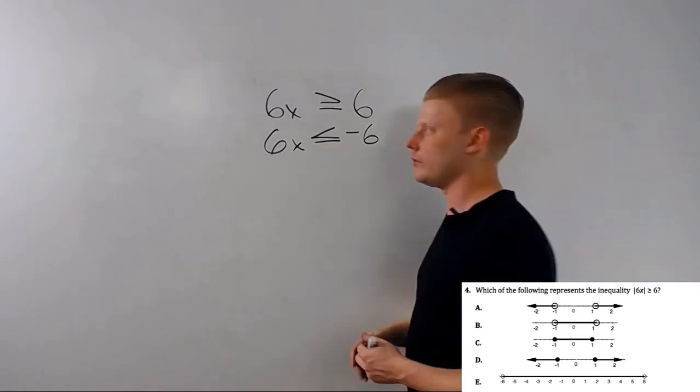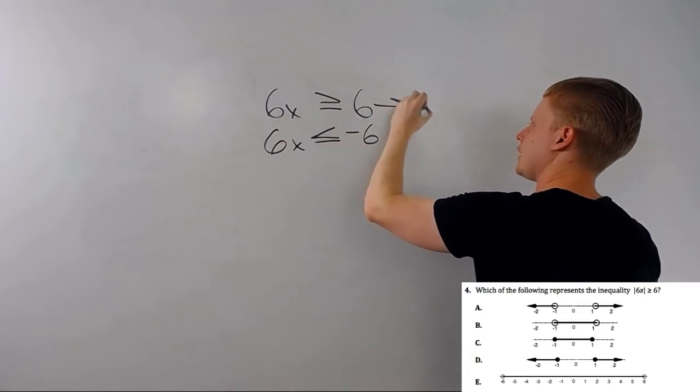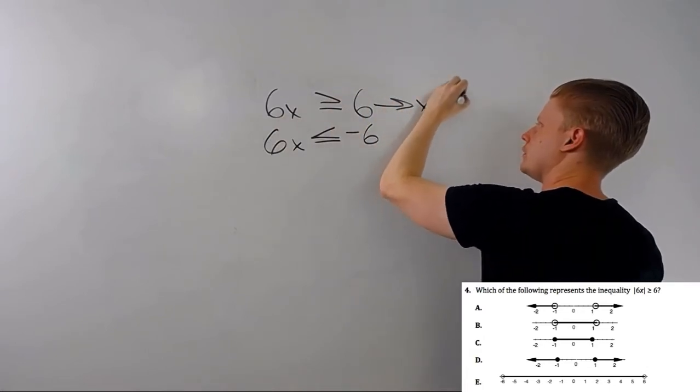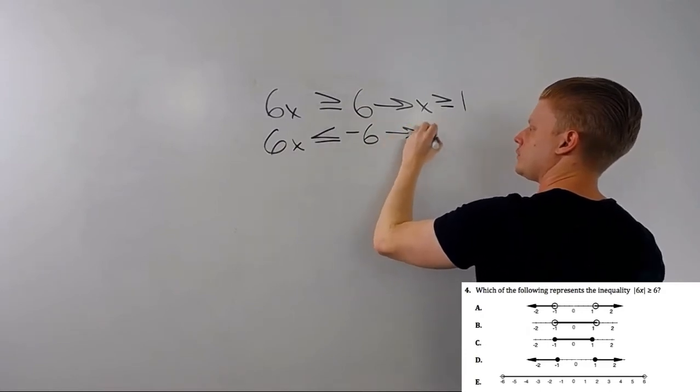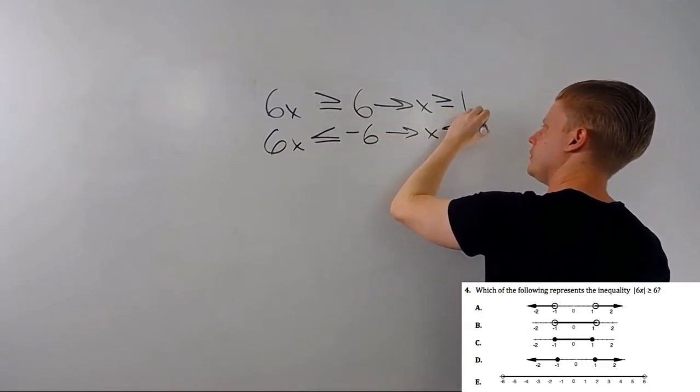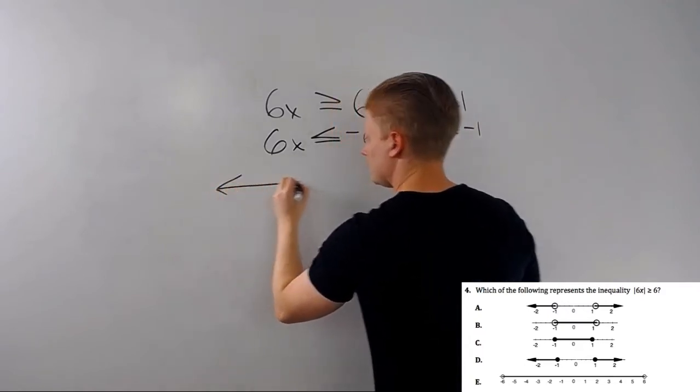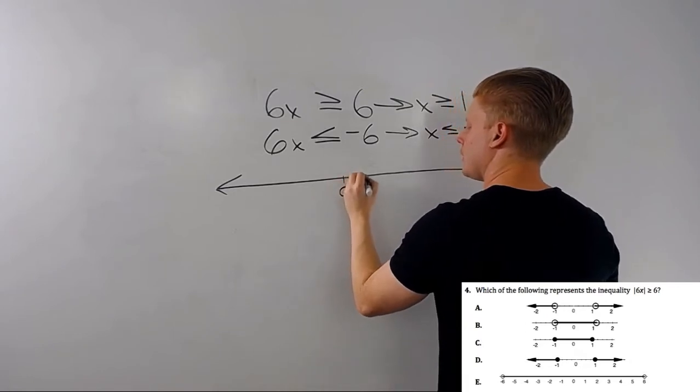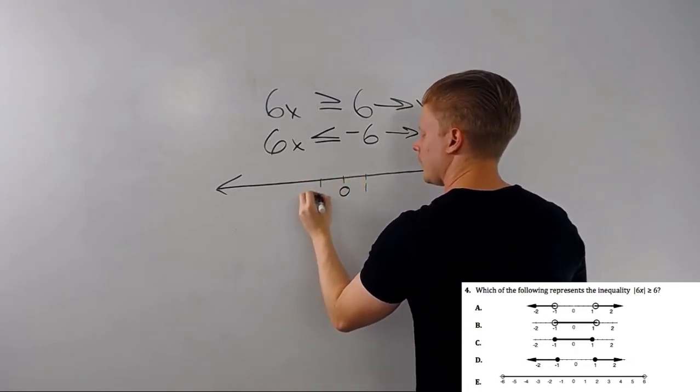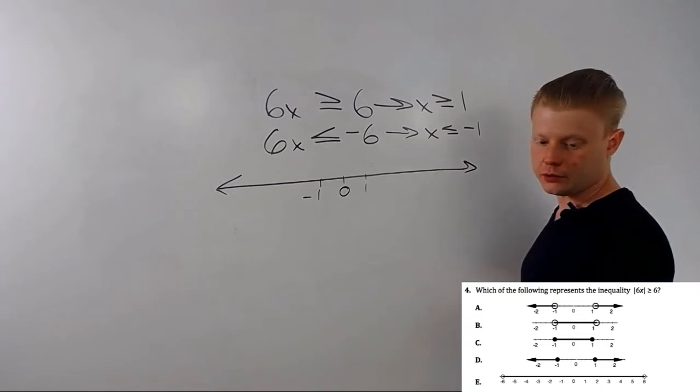Now I can solve this. This one will go, divide by 6, x is greater than or equal to 1. This one, x is less than or equal to negative 1. Now if we have a number line, we have 0 here, we have 1 here, we have negative 1 here.